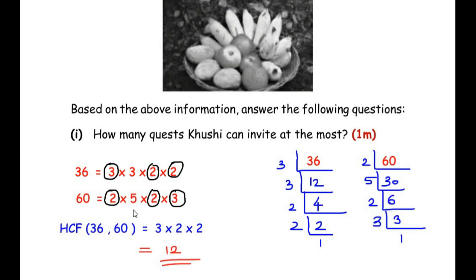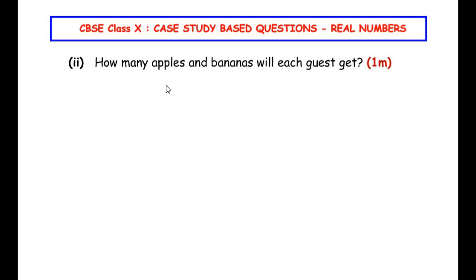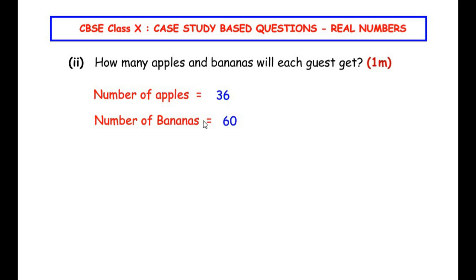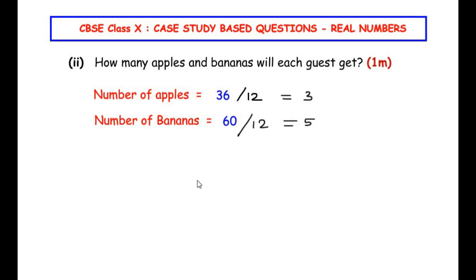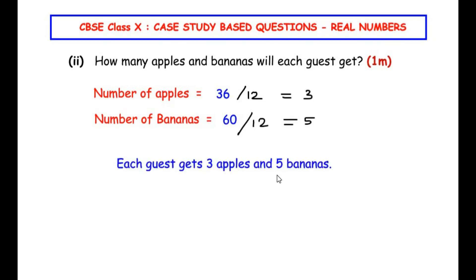Now for the second sub question: how many apples and bananas will each guest get? The total fruits are 36 apples and 60 bananas. To find each guest's share, we divide by the HCF of 12. 36 ÷ 12 = 3 apples and 60 ÷ 12 = 5 bananas. So each guest will get 3 apples and 5 bananas.